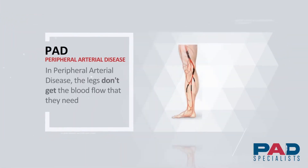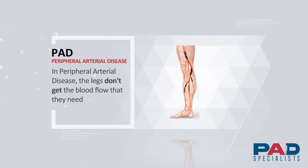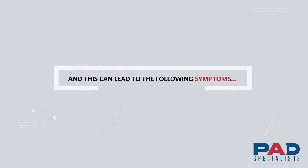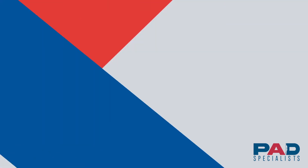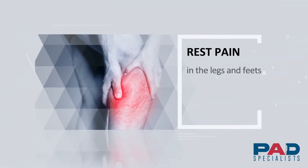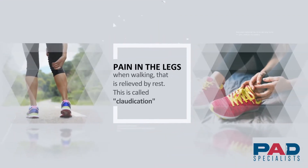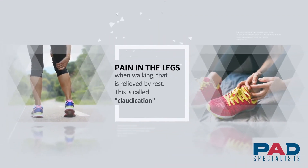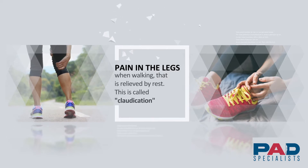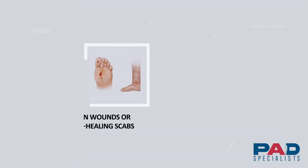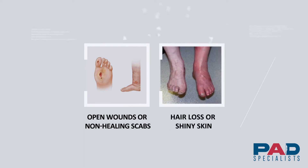In peripheral arterial disease, the legs don't get the blood flow they need, and this can lead to the following symptoms: rest pain in the legs and feet; pain in the legs when walking that is relieved by rest — this is called claudication; open wounds or non-healing scabs, hair loss, or shiny skin.